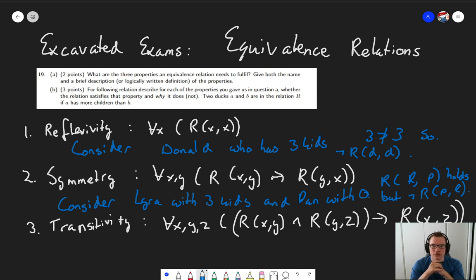Finally, let's look at transitive. Two ducks a and b are in relation if a has more children than b. So, if x has more children than y and y has more children than z, well yes, then clearly x must have more children than z as well. Now, we could formally prove this, but we're not asked for a formal proof. So, an explanation will do here.